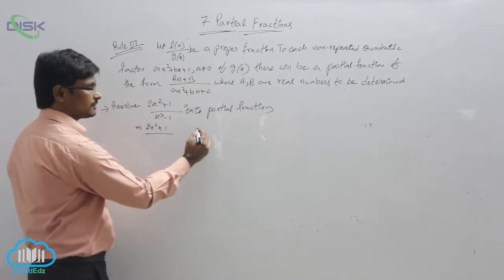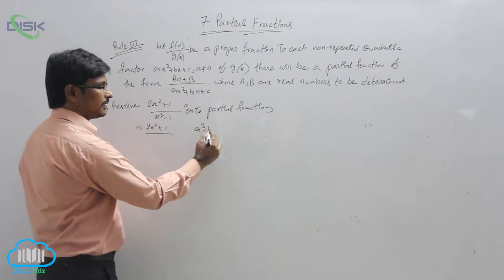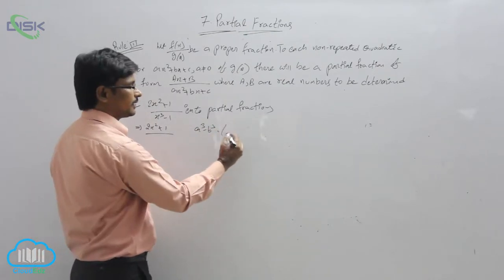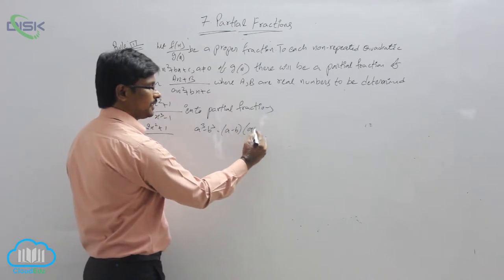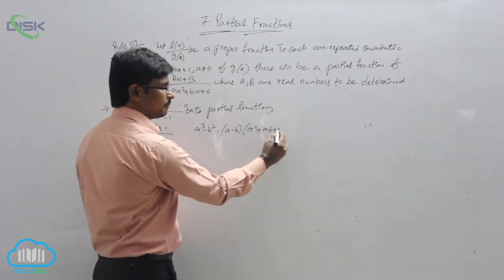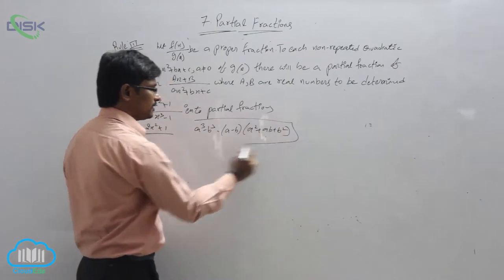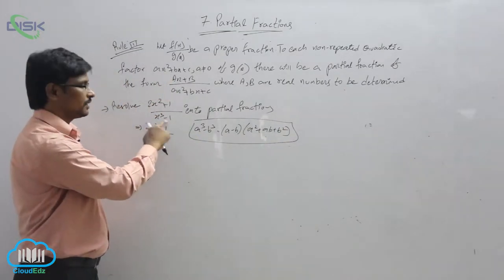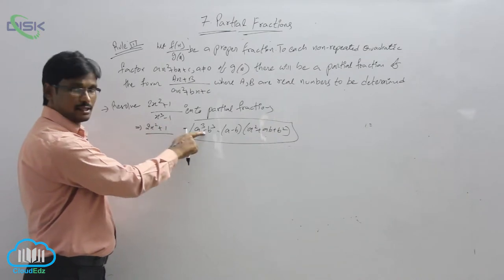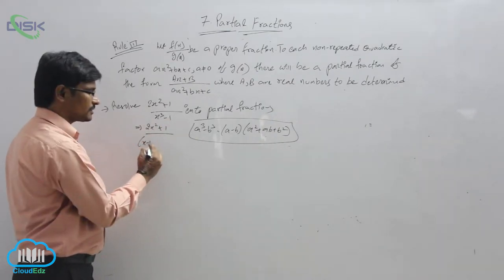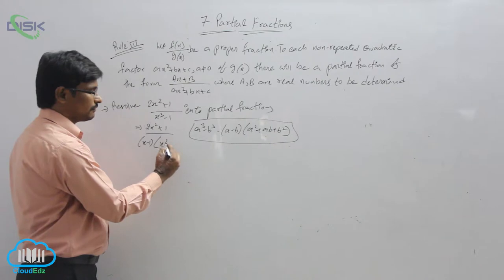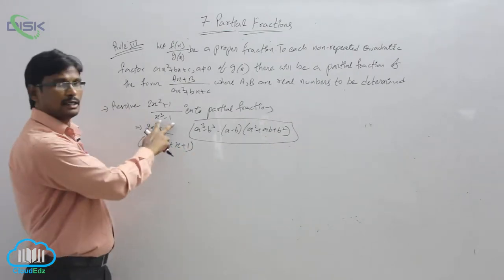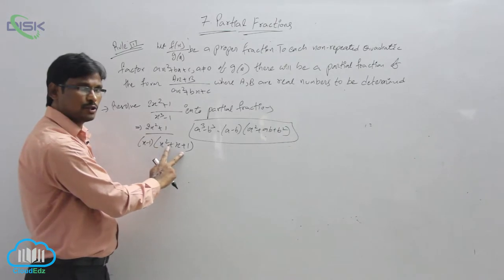This x³ minus 1 — we can write it using the a³ minus b³ model. We know that a³ minus b³ equals (a minus b)(a² + ab + b²). Applying this condition here: x³ minus 1³, where x = a and b = 1, gives us (x minus 1)(x² + x + 1). That is, we converted the denominator into a product of those two factors.